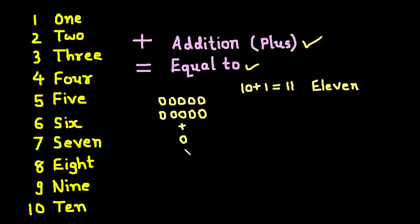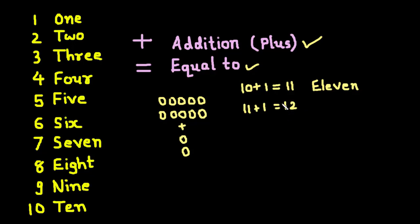Now let us add one more marble. We have 11 plus 1, or we can say 10 plus 2, which is equal to 12. Now we have 2 on the unit place and 1 on the 10's place. And this is called 12.